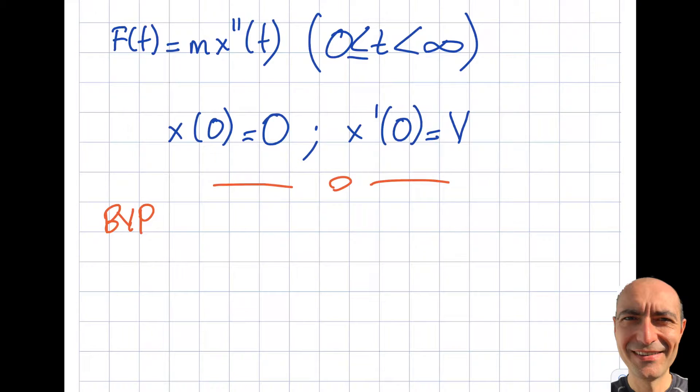So basically boundary value problem. Let's write it over here: conditions specified at two, or at least it can be more, points. That is the only difference in BVP and IVP.